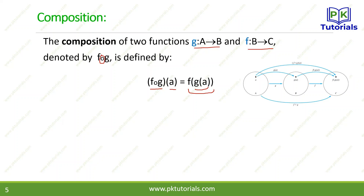For example, we can represent this with a figure. We have set A, set B, and set C — three sets. Function G maps A to B, and function F maps B to C. For element a in A, G of a gives an element in B. Then F is applied to G of a, giving F of G of a, which is an element in C. So F composite G of a equals F of G of a.